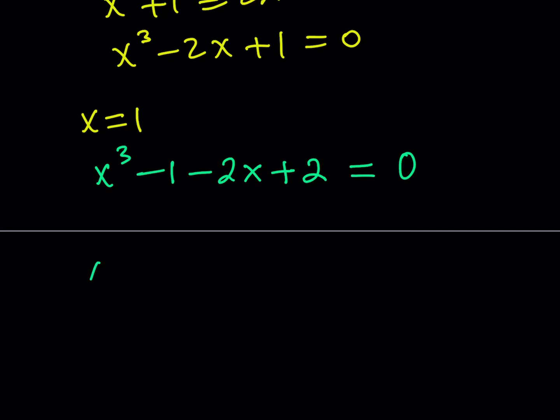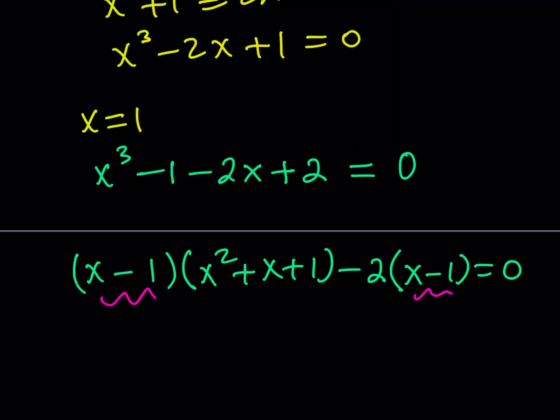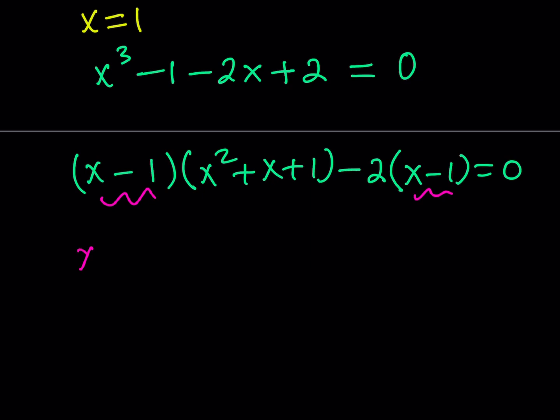Now we can factor out x minus 1. It's going to be multiplied by x squared plus x plus 1. Notice that difference of two cubes, sum of two cubes, super important formulas. The second part is going to have a negative 2 in front times the quantity x minus 1. So now we have x minus 1 as a common factor, and we knew that beforehand. Let's go ahead and pull that out.